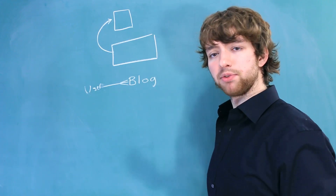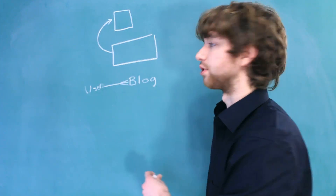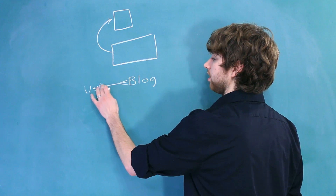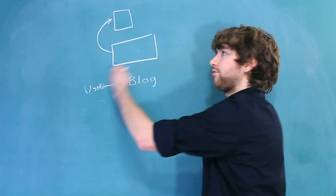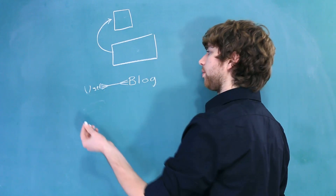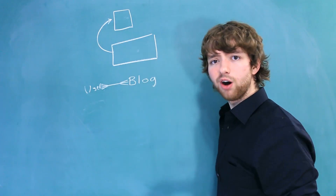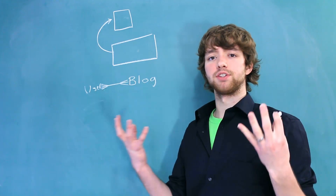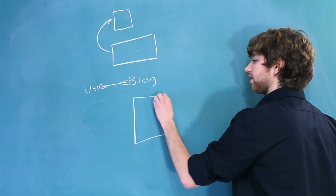What if we wanted to alter this app so that a blog could have many users? The way we did it without the many side for the user is we had the blog table reference the user. Well, if we wanted to do the many side on this side, all we would have to do is have the user table reference the blog table. But then there's a problem, because now we have a table referencing another table, and it gets really messy.